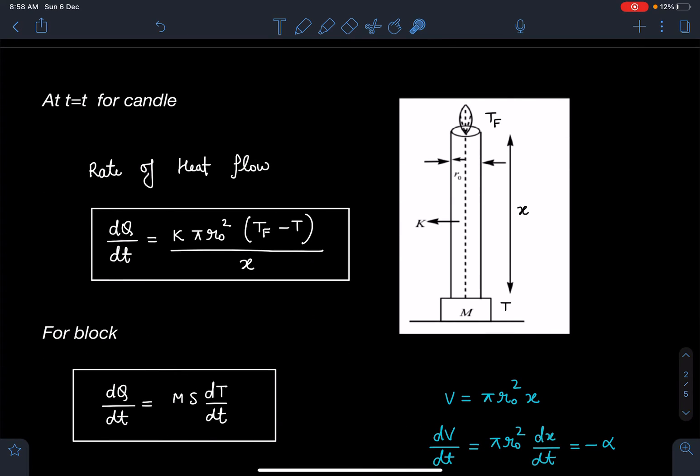Let's discuss at any instant t when length of this candle is x, temperature is Tf. The rate of heat flow through the candle I can write k times area πr₀² and at that moment temperature of this block is T, so I can write ΔT as Tf minus T divided by the length of the candle. For block, the rate at which energy is absorbed can be written as Ms dT/dt.